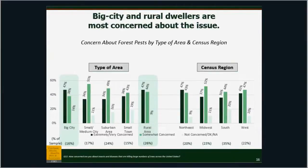In terms of concern for forest pests by region, big city people are really concerned — metropolises like Chicago and New York City — and rural areas are extremely concerned about it. But small cities and suburban areas show somewhat less concern and are less willing to say they are extremely concerned. According to the biggest census regions, breaking the country into four chunks, concern is fairly significantly different — the Northeast is 11% more 'extremely concerned' than the South. These results may also be muddled by the question of invasive versus native insects.